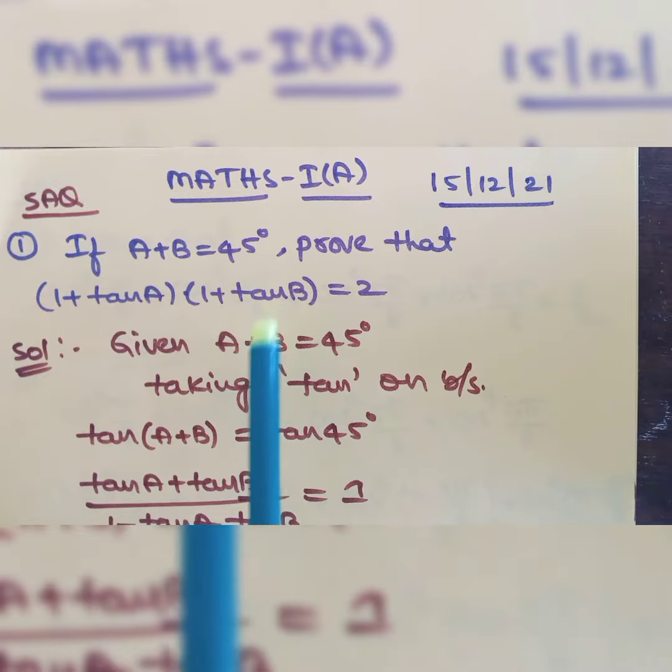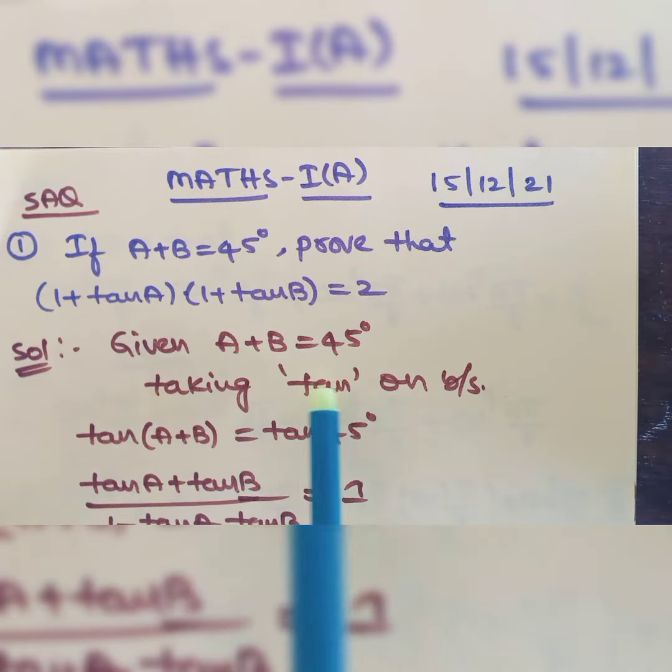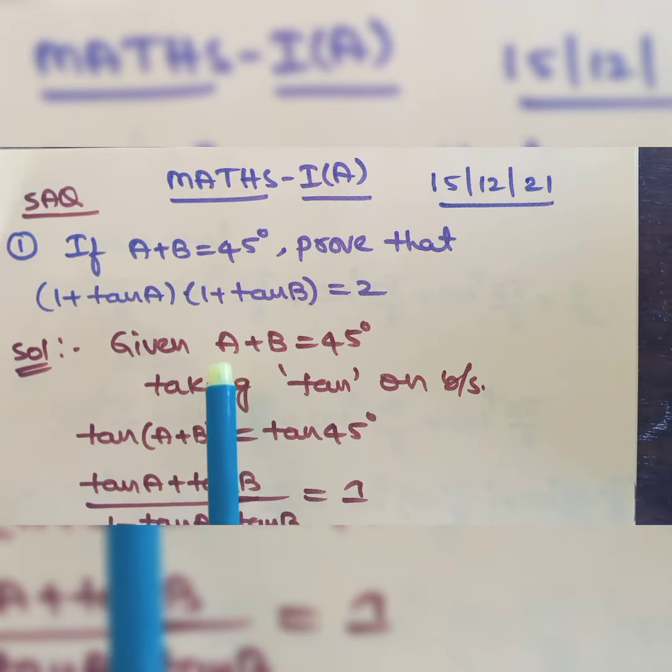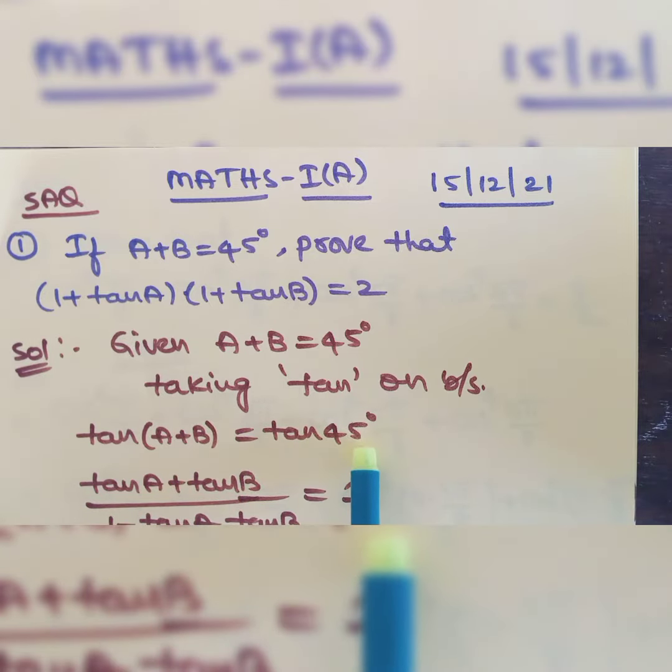In the question we have tan terms, that is why we are taking tan on both sides. If you take tan on both sides, then we will get tan(A + B) is equal to tan 45 degrees.